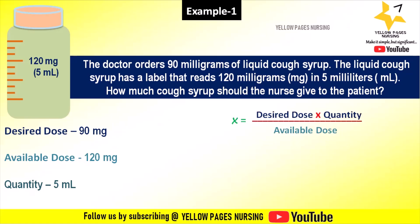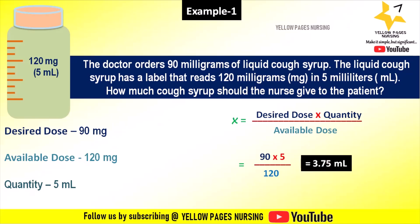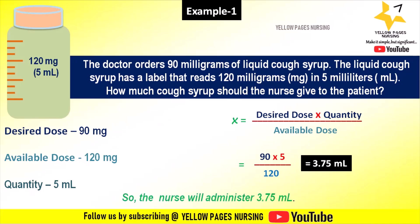The formula used for calculation is: x equals desired dose multiplied by quantity, divided by available dose — which equals 90 multiplied by 5, divided by 120 — which equals 3.75 ml. So the nurse will administer 3.75 ml of the syrup.